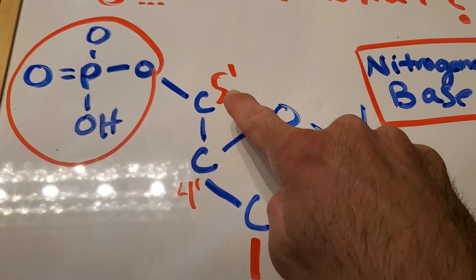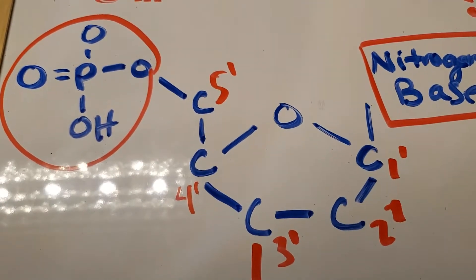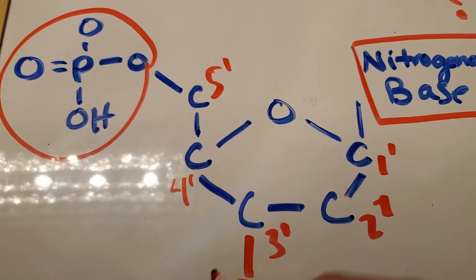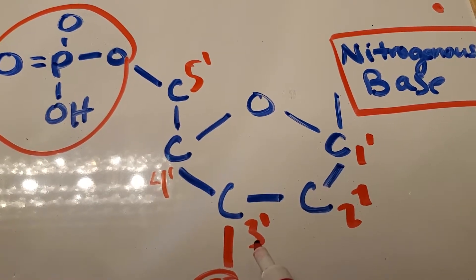So, the 5 prime, that is essentially like it's your top. It's like it's the top of your nucleotide. The 3 prime is kind of like it's the bottom of the nucleotide.